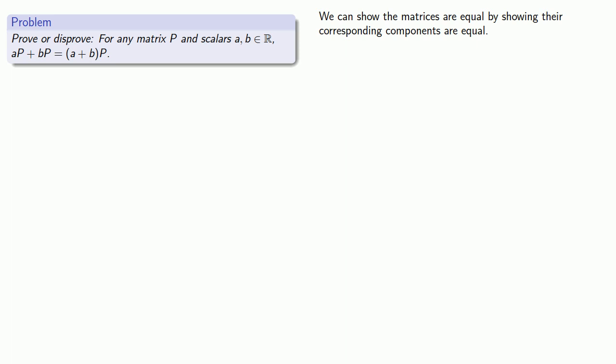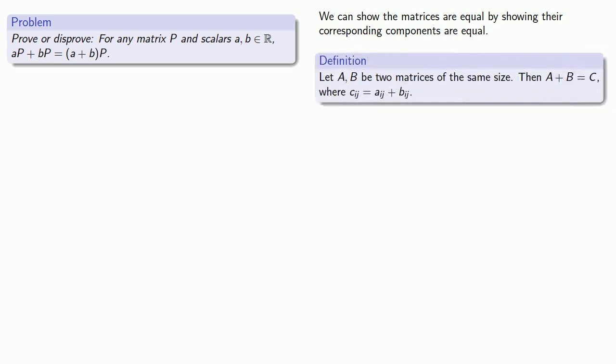For our matrix aP + bP, there's two operations going on here. First, there's matrix addition, which I perform by adding the corresponding components, which means I need to add the entries of aP to the entries of bP.